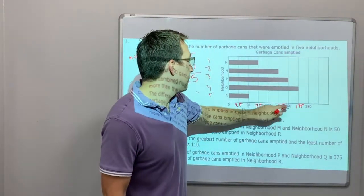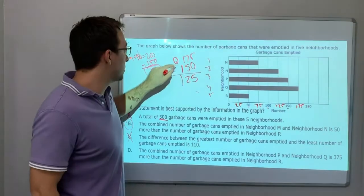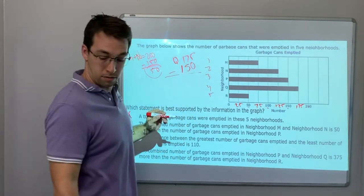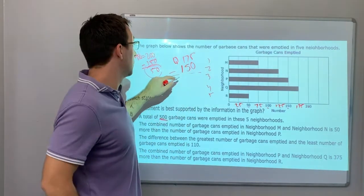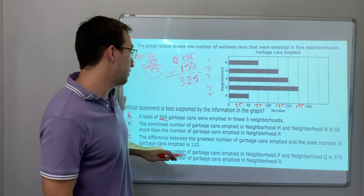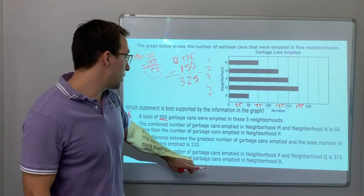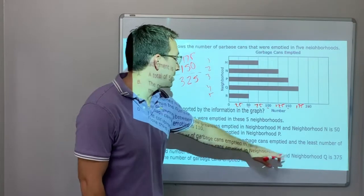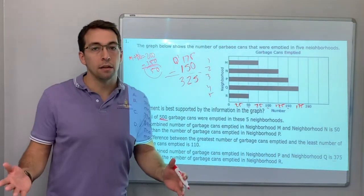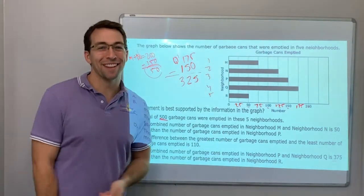P and Q, that's 150 plus 175. So 150 plus 175. 5, 12, 325 more than the emptied in. No, it's not even 375, so that's wrong. Answer is B. I just ran out of the whiteboard, so we'll do the next video soon. Later, guys.